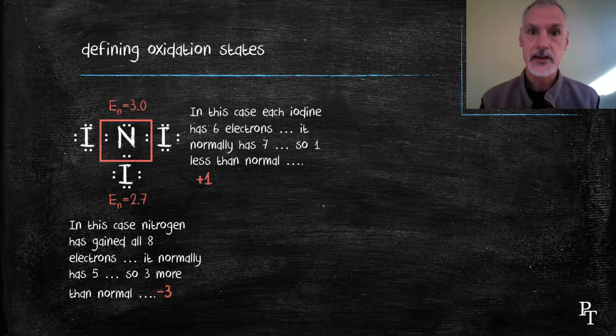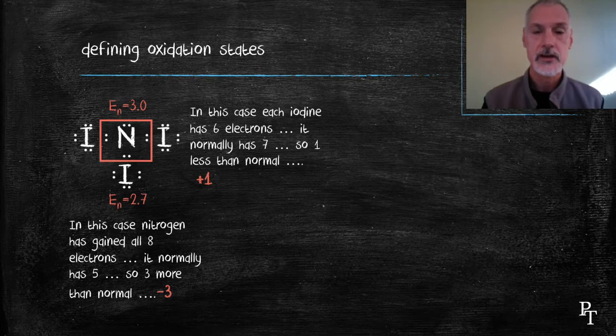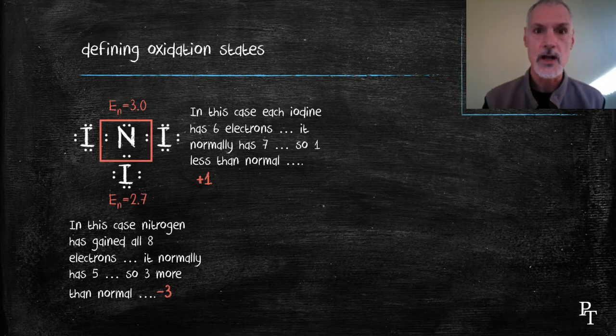The iodine, on the other hand, has six electrons. Normally it should have seven. So it's one short, and as a result, has developed an oxidation state of plus one.